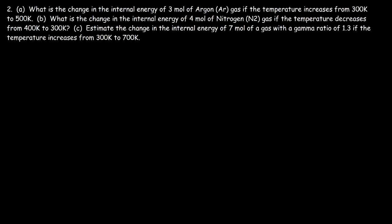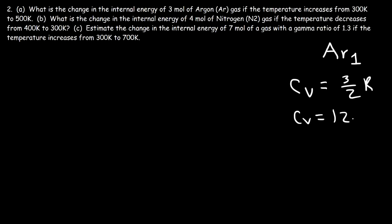Problem 2: what is the change in internal energy of 3 moles of argon if the temperature increases from 300 Kelvin to 500 Kelvin? Argon consists of 1 atom per particle, so it's a monatomic gas. The molar heat capacity for a monatomic gas is 3/2 times R, which is 3 times 8.3145 divided by 2, giving 12.47 joules per mole per Kelvin.